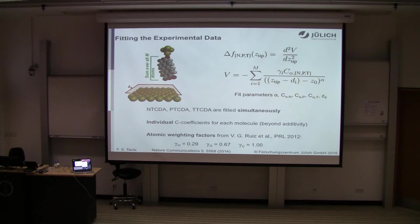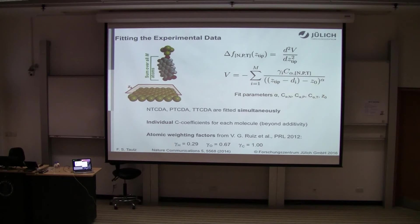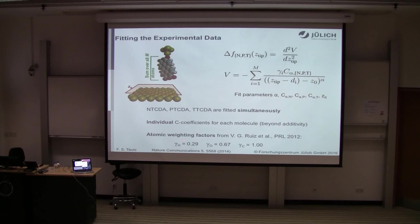This is the fitting strategy: we fit all three curves — NTCDA, PTCDA, TTCDA — simultaneously using fit parameters alpha, and the three C3 coefficients for the different molecules, and Z₀. By having individual coefficients for the different molecules we go beyond additivity, allowing carbon atoms in the different molecules to have different contributions. We use atomic weighting factors for carbon, hydrogen, and oxygen atoms from theory, because we want to compare with theory in the end.